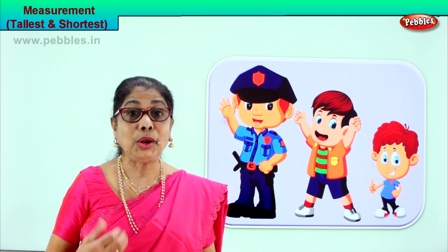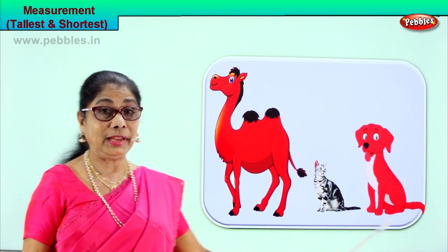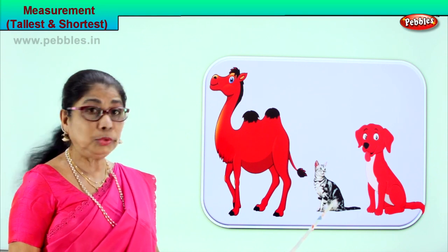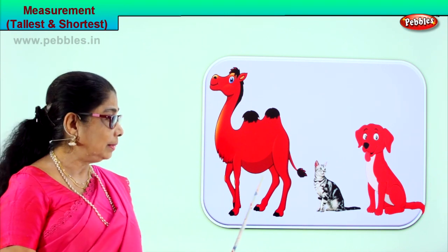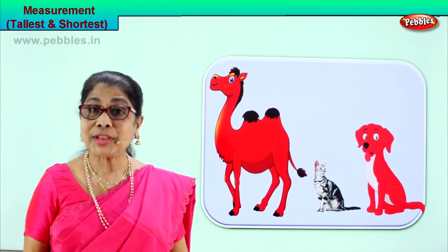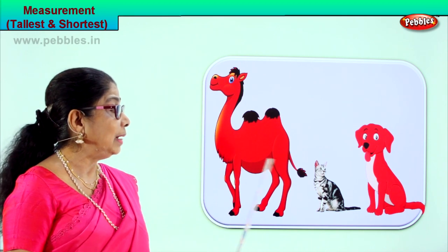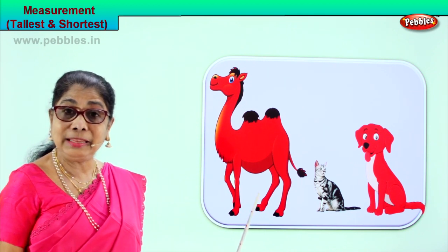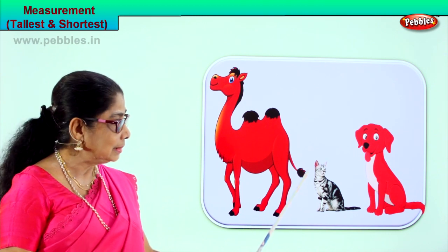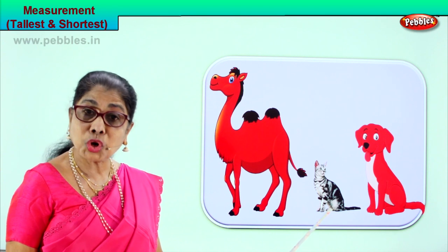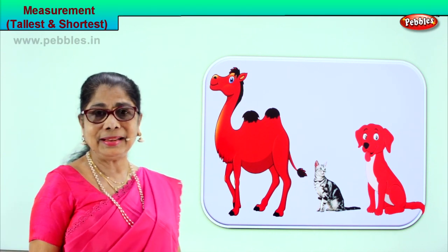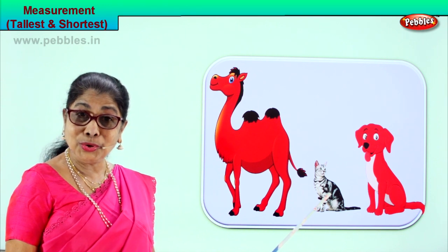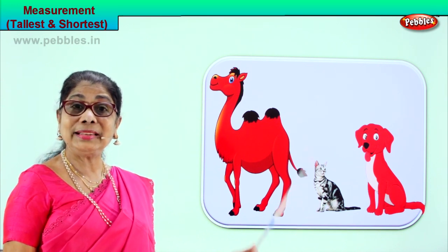Let's take another exercise. Look and observe and tell me carefully. You have three animals here. What are they? A dog, a pussy cat, and a camel. Which animal is the tallest here among the three — the dog, the cat, and the camel? The camel is the tallest animal in this picture. Then which is the shortest animal? Certainly the cat is the shortest animal in this picture. Tallest: camel. Shortest: the pussy cat. You learn to look, observe, and learn the measurement — shortest and tallest.